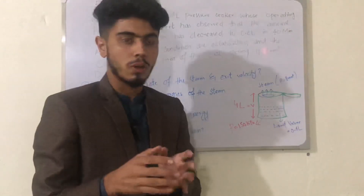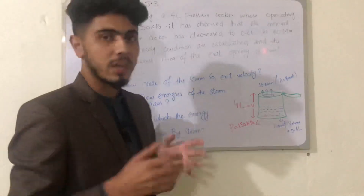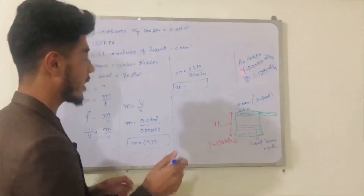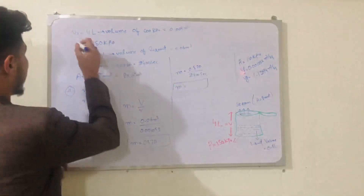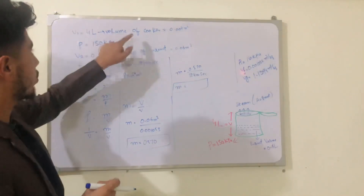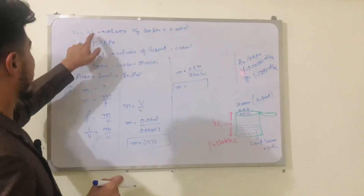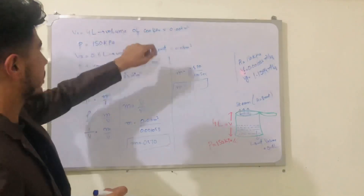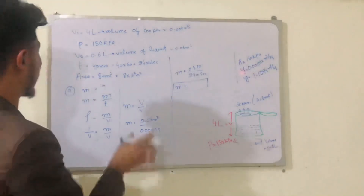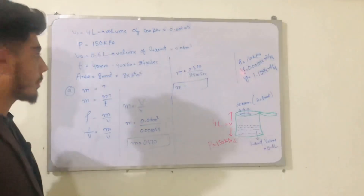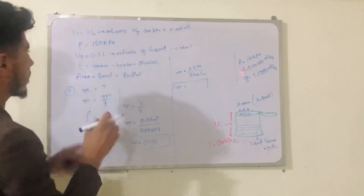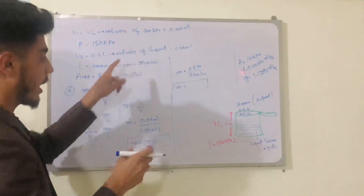Now we write the given data. Volume of cooker: 4 liters, converting to 0.004 meter cube. Operating pressure: 150 kilopascal. Volume of liquid: 0.6 liter.